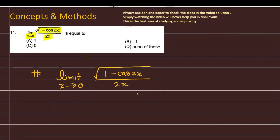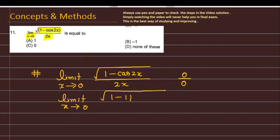अब देखें — अगर आप इस function की limit निकालने जा रहे हैं और x को 0 की ओर approach करते हैं, तो numerator भी 0 की ओर approach कर रहा है और denominator भी 0 की ओर approach कर रहा है। That means right now the format is 0 upon 0. इस case में मुझे reduce करना पड़ेगा। तो हम लोग लिखते हैं limit x tending to 0, और numerator को हम लिख सकते हैं: 1 minus (1 minus 2 sin²x), divided by 2x. मैंने यहाँ पर trigonometric identity use की है।